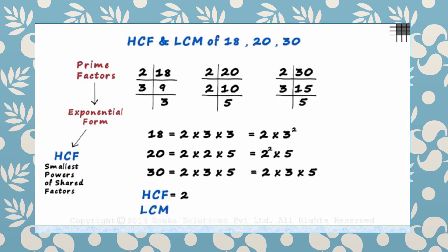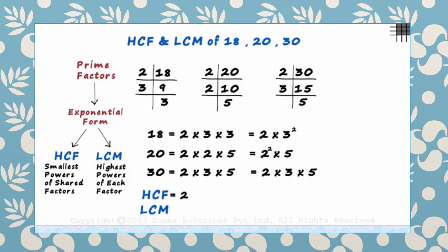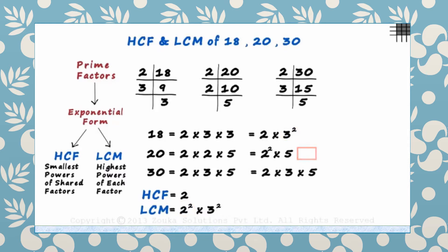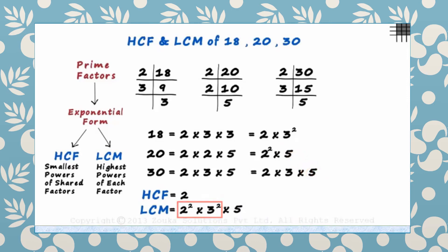To find the LCM, we multiply the highest powers of each factor. For the LCM, the factors do not have to be shared. Looking at 2, the highest power is 2 squared. Among 3 and 3 squared, 3 squared is higher — so we multiply by 3 squared. Notice that 3 is not present in 20; it doesn't matter, because for the LCM we consider the highest power of each factor whether shared or not. The last factor is 5, present as 5¹ in two numbers, so we multiply by 5.